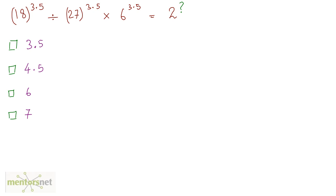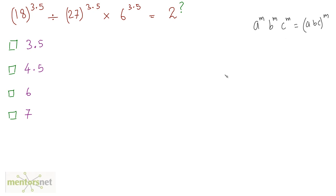Moving ahead with question number 2. We have a situation where a raised to m times b raised to m times c raised to m — the power is the same. So we can write this as a times b times c, raised to power m. This is a law of indices.